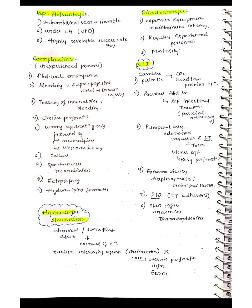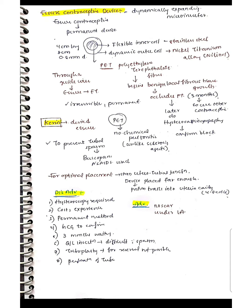The Essure contraceptive device is a hysteroscopic method of contraception. It is a dynamically expanding microinsert — a permanent device with a flexible inner coil made of stainless steel and a dynamic outer coil made of nickel titanium. The inner coil contains PET fibers (polyethylene terephthalate). When inserted into the cornual portion of the fallopian tube via hysteroscope, these PET fibers cause benign local fibrous tissue growth, which occludes the fallopian tube. This process takes approximately three months.